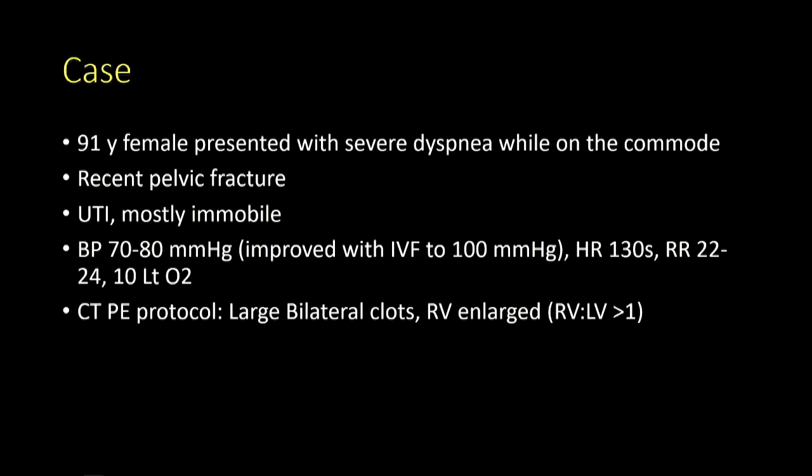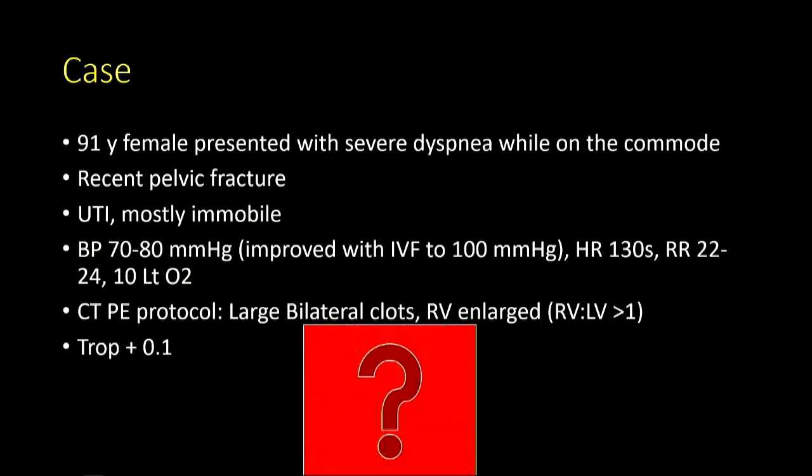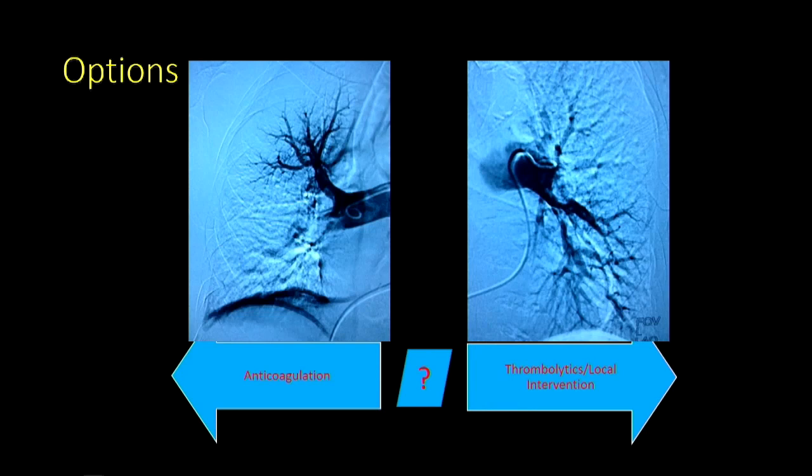She underwent a CT angiogram showing bilateral pulmonary embolism with an enlarged RV. The RV-to-LV ratio was more than one, and her troponin was positive. These are the kinds of patients we see routinely in our PERT councils, and the question is: what's next? As with any patient, you have multiple options.